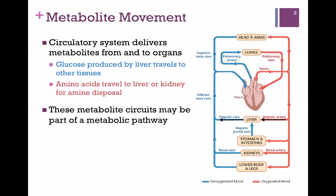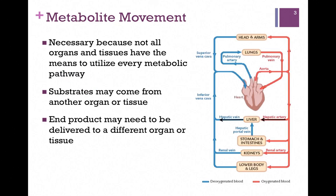For instance, the liver will produce glucose, and that needs to travel via the hepatic vein to other tissues for fuel use. Amino acids travel to the liver via the hepatic artery for nitrogen disposal. These metabolite circuits may actually be part of a larger metabolic pathway, because not all organs and tissues have the means to utilize every metabolic pathway. Substrates may come from one organ or tissue, and the end products may need to be delivered to a different organ or tissue.